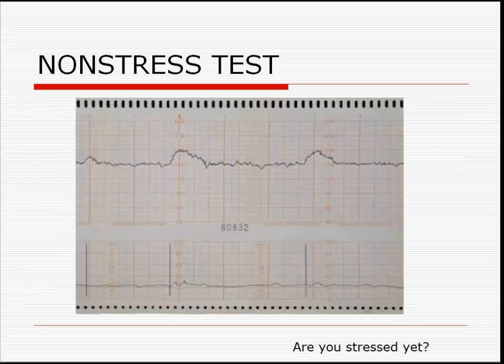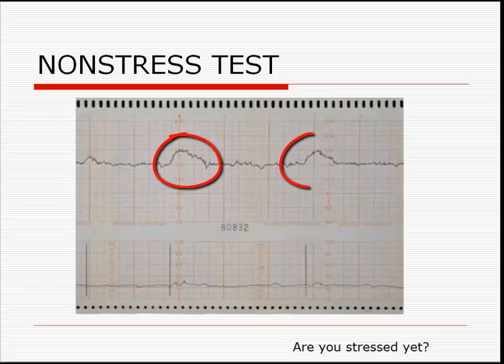This fetal strip demonstrates the baby's heart rate on top and minimal uterine activity on bottom. The fetal heart rate shows moderate variability, which is reassuring, and two large accelerations. This is a reactive NST — the baby is okay.